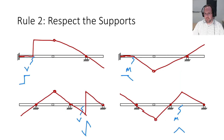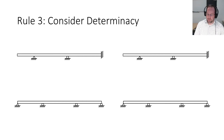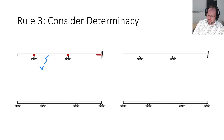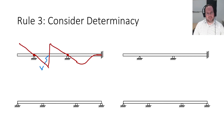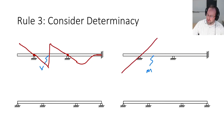Our final rule for Mueller-Breslau is to consider determinacy. All the systems I've looked at so far are determinate, which means you can solve them using statics alone. For indeterminate systems, things change — I still must have zero influence at the supports and zero influence and zero slope at my fixed end. For shear in an indeterminate system, the cantilever span looks straightforward, but the final span comes in at a negative slope and must bend back to zero slope and zero displacement. Indeterminate systems will almost always have bent shapes.